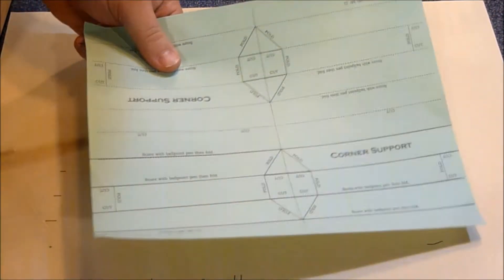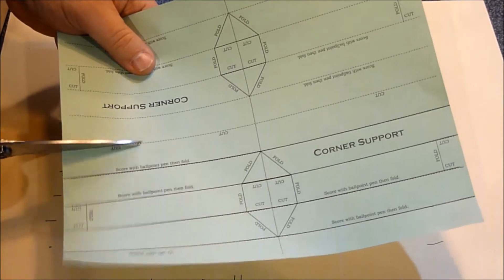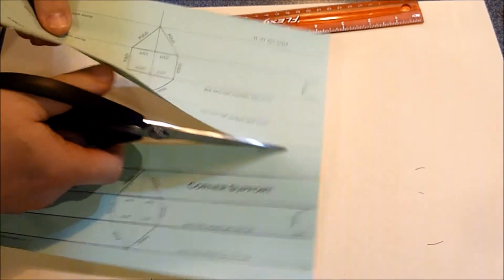Then you just cut it out. You cut it once this way, you cut it in half lengthwise, and then you cut it in half widthwise.